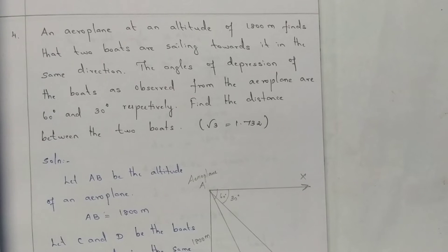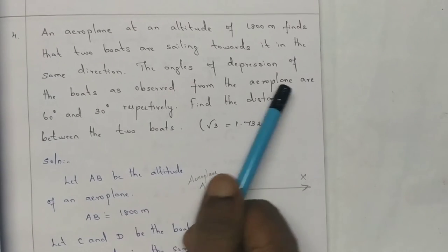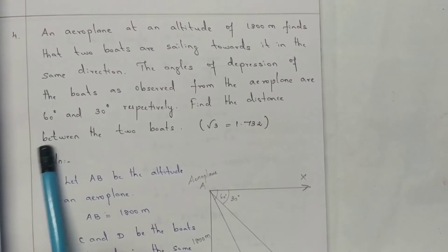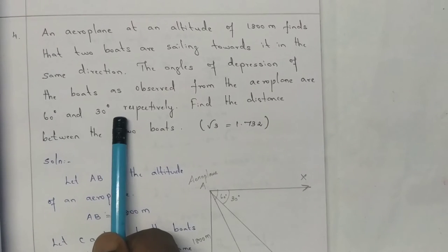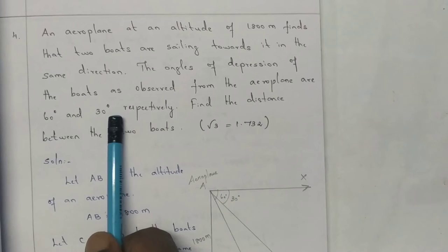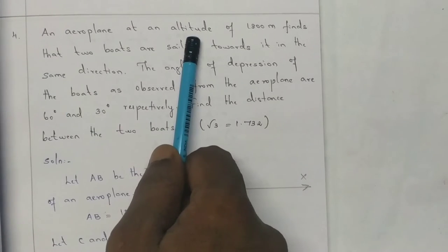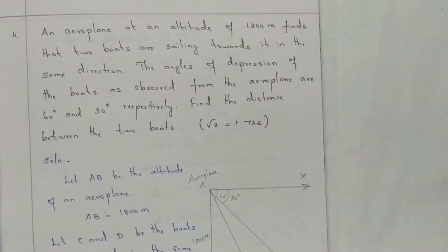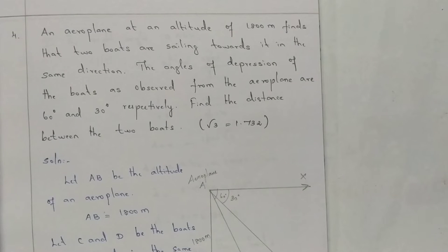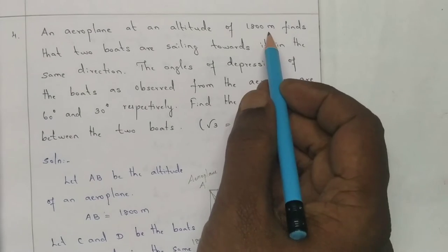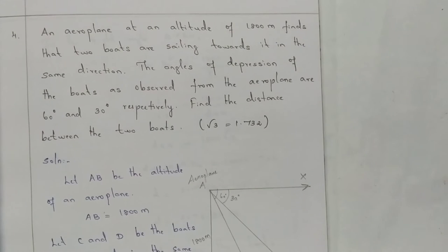The angle of depression is 60 and 30 degrees. The altitude of the aeroplane is 1800 meters.